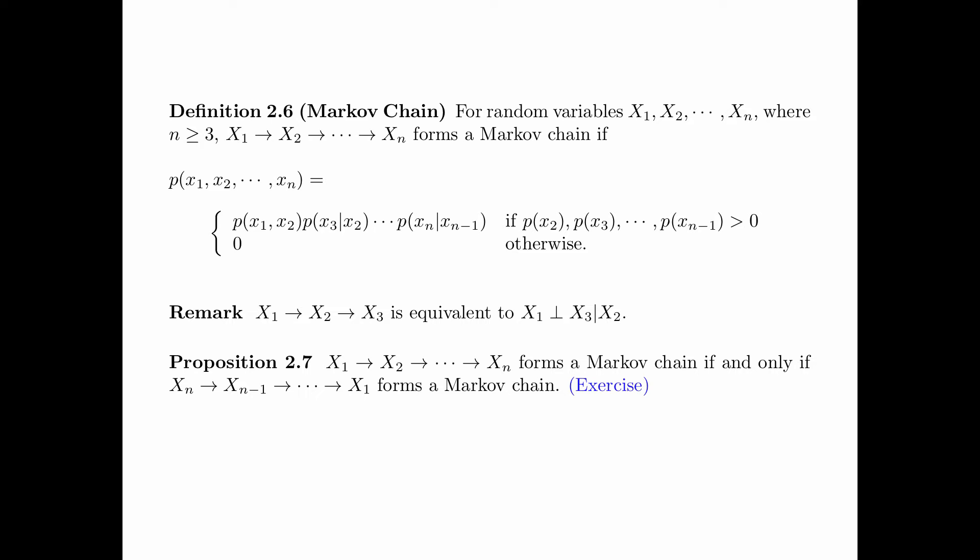Proposition 2.7 says that x1, x2, ..., xn forms a Markov chain in this order if and only if xn, xn−1, ..., x1 forms a Markov chain. Basically, if you have a Markov chain in a certain order and you reverse the order, it is still a Markov chain. The proof of this proposition is left as an exercise.